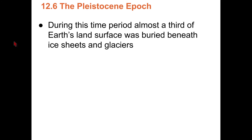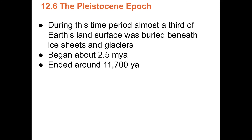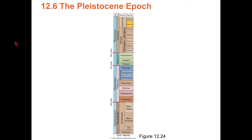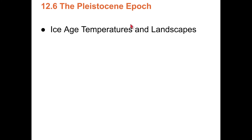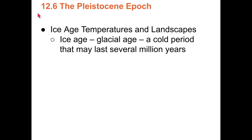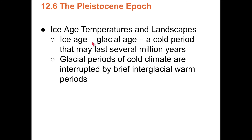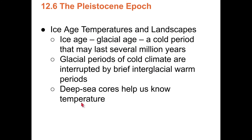The Pleistocene was the last ice age, beginning 2.5 million years ago and ending about 11,700 years ago. In that time we've seen at least 22–23 glacial-interglacial cycles: roughly 10,000 years of warm interglacial followed by 90,000 years of cold glacial conditions. Deep sea cores and ice cores tell us how we know this. During the glacial period, things were very different.